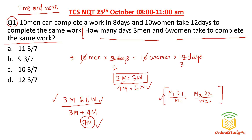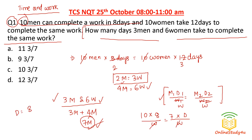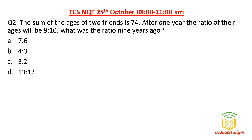Since work is the same, W cancels. M1 = 10 men, D1 = 8 days; M2 = 7 men, so D2 = 80/7 days. That is 11 and 3/7, since 77 + 3 = 80. So 80/7 — option A — is the correct answer for question number one.